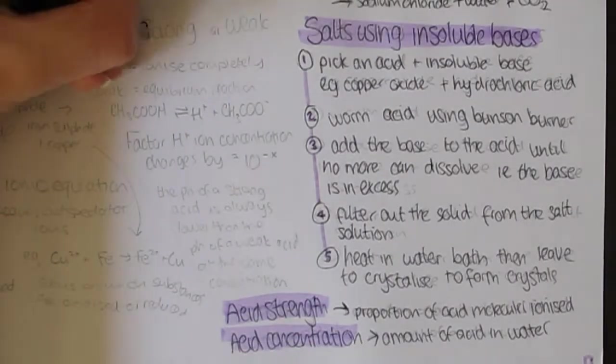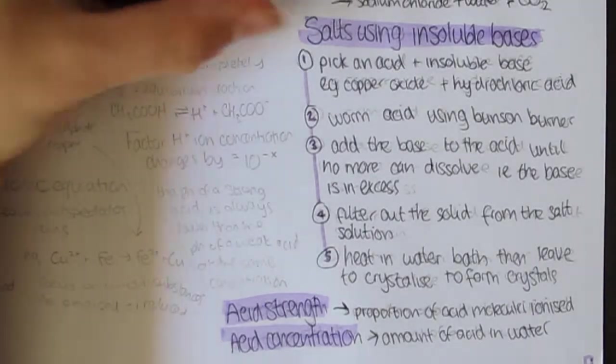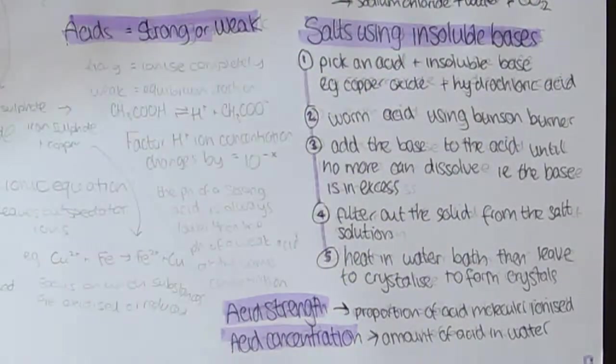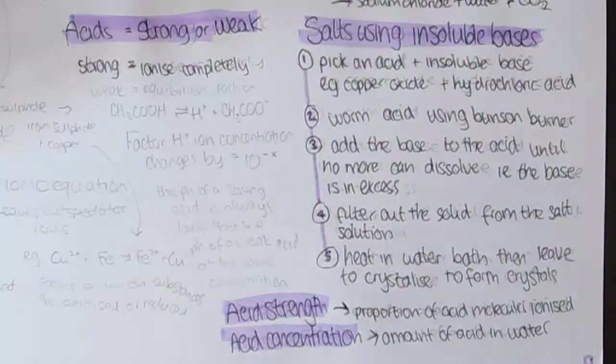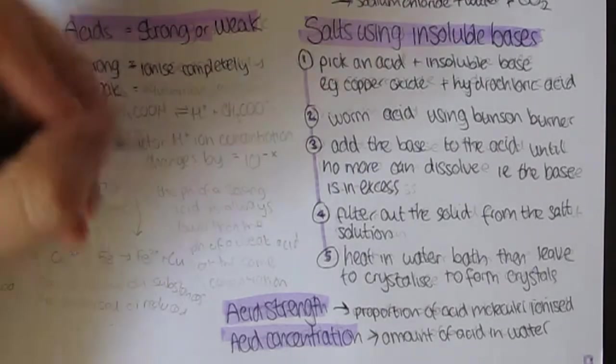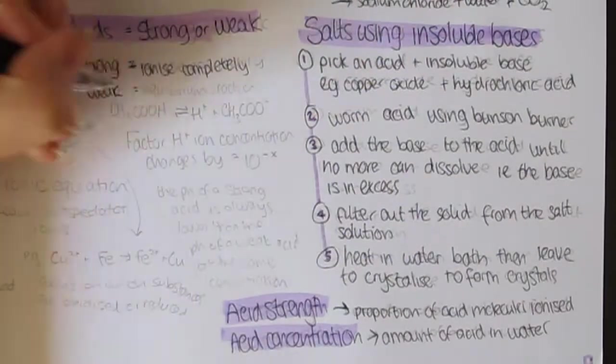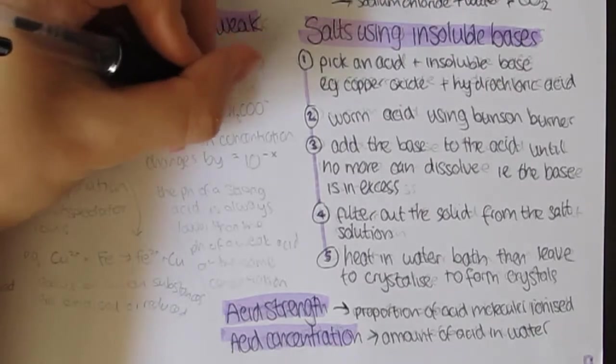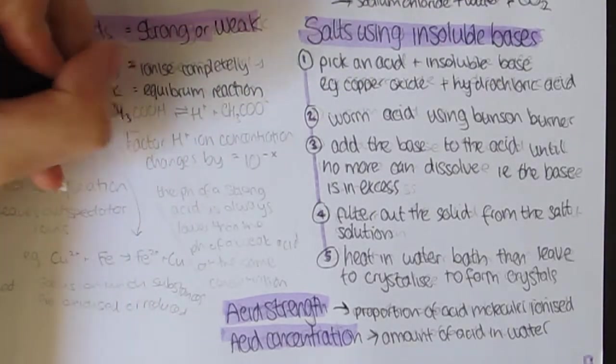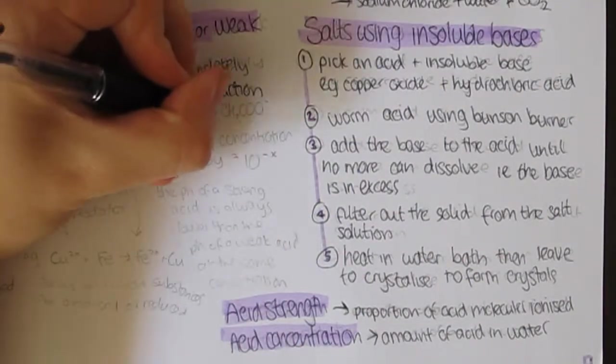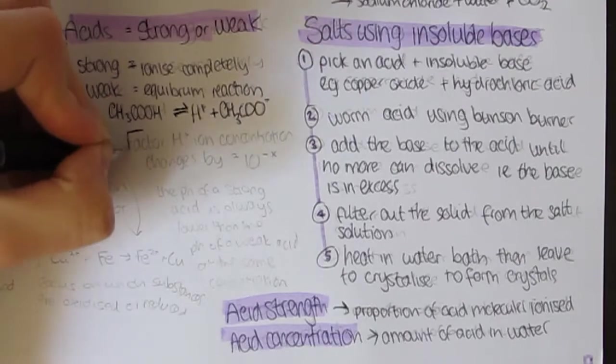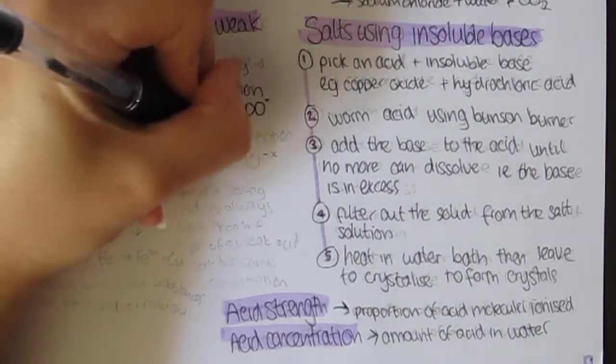Acids produce protons, H+ ions, in water. For example, hydrochloric acid makes H+ plus Cl-. But acids can be strong or weak. The strong ones ionize completely in water and all the particles dissociate to release H+ ions, whereas weak acids do not ionize in the solution and their reaction is reversible, i.e. an equilibrium reaction. For example, CH3COOH in a reversible reaction makes H+ plus CH3COO-.